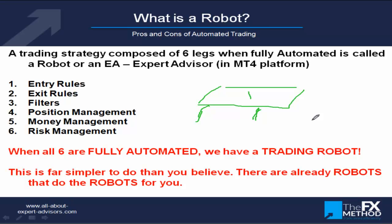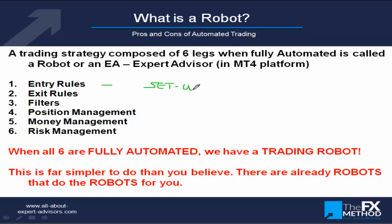The entry rules decide when and how to enter the market, and they're composed of two parts. First is the setup — watching for the right conditions for this type of strategy. For example, if you want to hunt rabbits you better be in the right field; if you want to hunt elephants, you better go to Africa and not Siberia. So you need to have the right setup. Depending on the trading style, you need to confirm these conditions are occurring in the market right now.